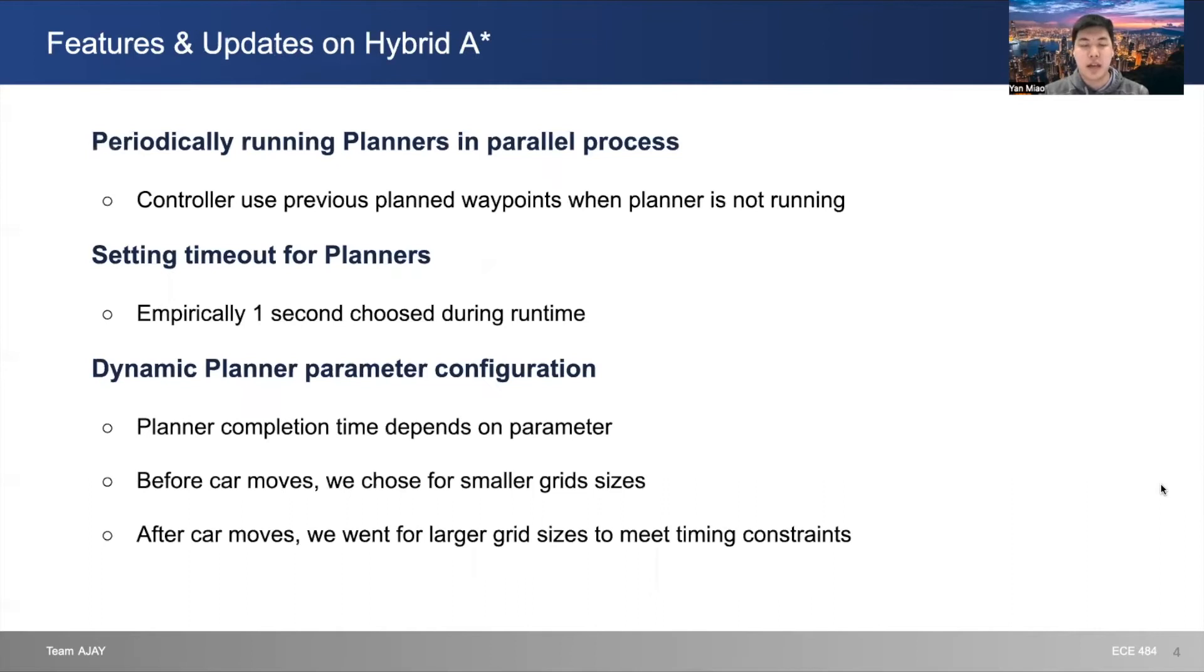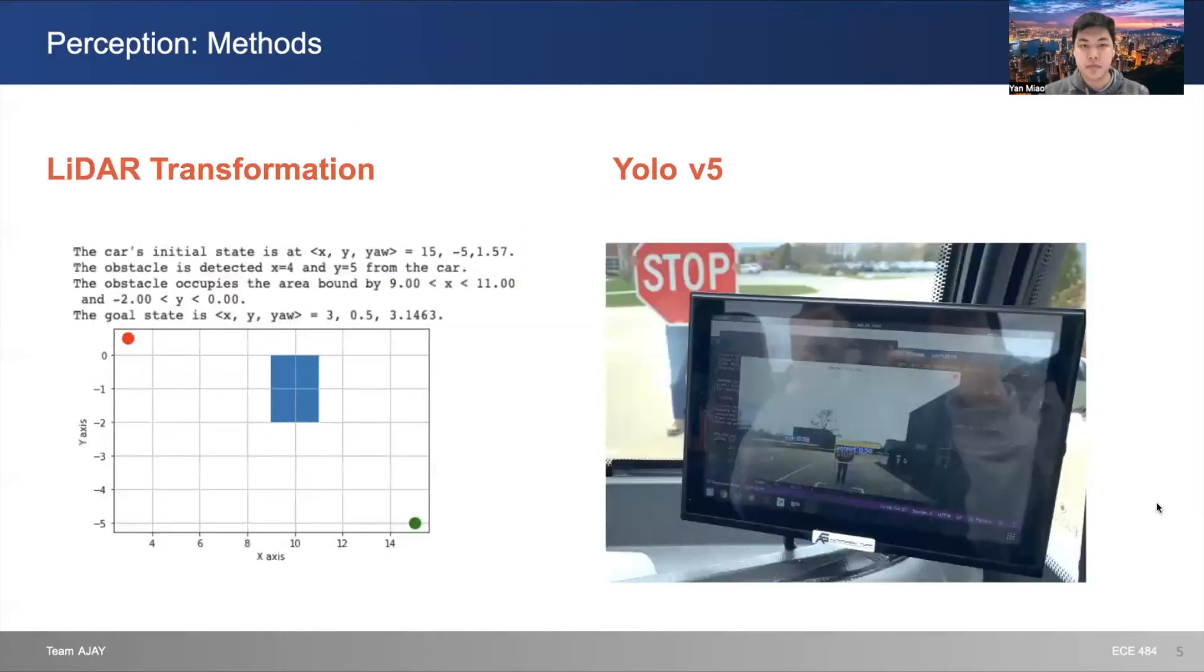We also made some extra changes and additional features to our hybrid A* planner. To meet the real-time constraints, we added three features: radically render planners inside of every decision point, setting a one-second timeout, and dynamic parameter changing.